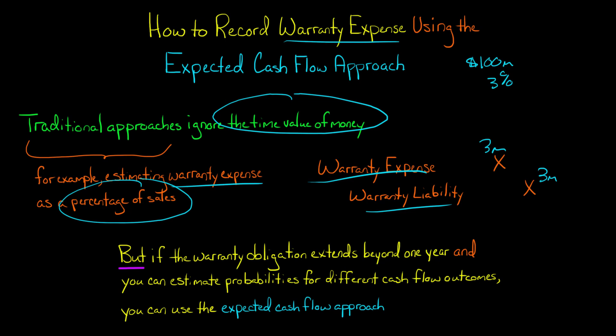What if we're talking about a five-year warranty? In that case, the company is going to incur warranty costs in years one, two, three, four, and five of the warranty. So those costs are incurring in the future, but you're not discounting them back to their present value. That's what we're going to do with the expected cash flow approach — we are going to take into consideration the time value of money.